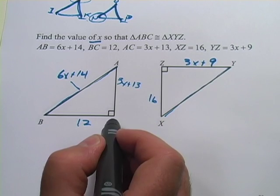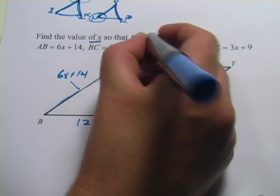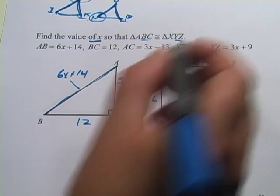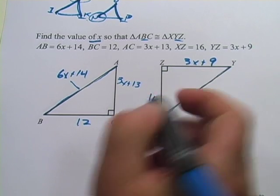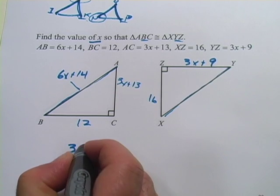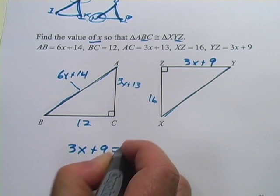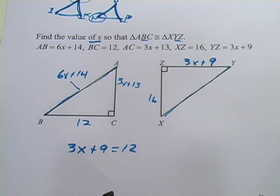How about the side BC? So BC is going to correspond to YZ. So BC equals 12 and YZ equals 3x plus 9. So I could simply set up this equation, 3x plus 9 equals 12. And I'm good to go.